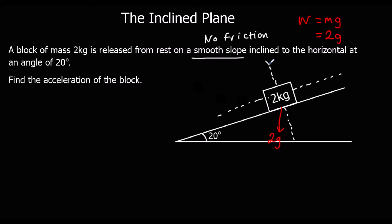We also have the normal reaction which acts perpendicular to the plane — that's the force that stops it going through the ground or flying off the surface. Those are the only forces; there's no friction to worry about. The angle here is 20 degrees. The same angle as the inclined plane is going to be the angle between the weight and our tilted plane, because we've tilted it by 20 degrees.